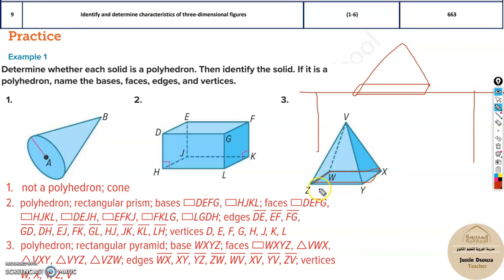Now over here, the base would be Z, W, X, and Y. So you can see there is only one base. W, X, Y, and Z. Yeah, that's fine. It's the same thing. There's only one base.